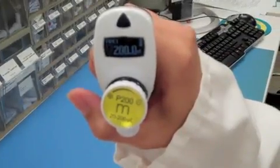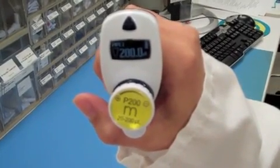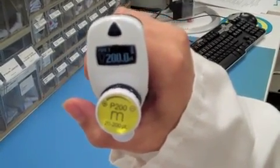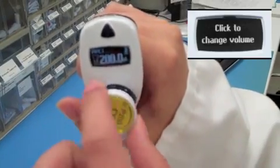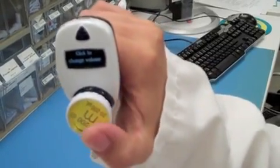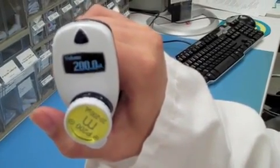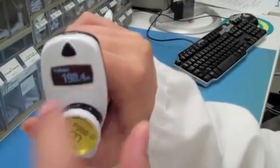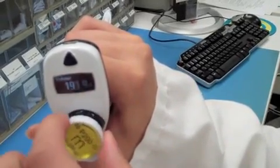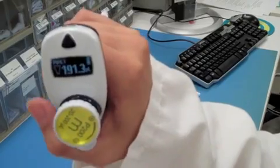The Pipetman M is extremely simple. There are only two buttons required to access all menus. First, to change the volume, you simply turn the push button a half turn. The display will read, click to change volume. Click the button. When the volume is flashing, you can now turn the push button and change the volume. When you have it set, simply click the push button again.